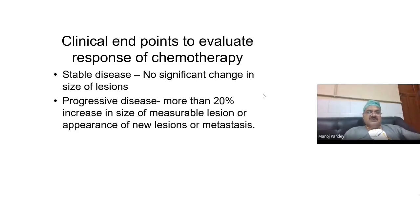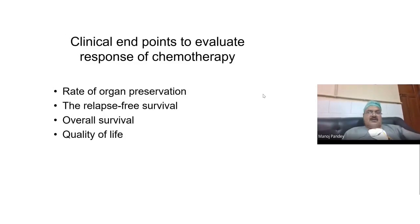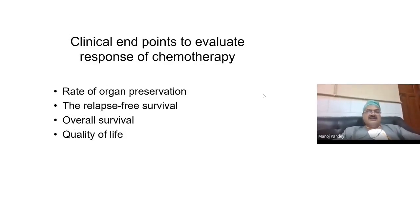Basically, chemotherapy response is divided into four categories: partial response, complete response, stable disease, and progressive disease. Apart from the chemotherapy response, there is something called an endpoint — what you evaluate at the end of therapy.